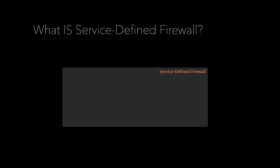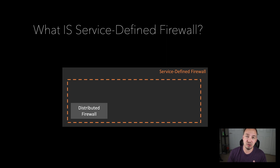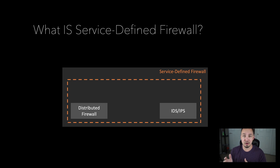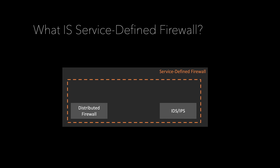Let's talk about what actually makes up the Service Defined Firewall — the actual components. The first is the Distributed Firewall, which is essentially a stateful firewall built into the hypervisor in the case of vSphere. If you're doing bare metal, there's an agent that gets installed on bare metal servers as well. This provides firewalling down to the vNIC of each individual VM. The next component is the Distributed IDS/IPS, which sits exactly where the Distributed Firewall sits, in a distributed manner. So there are no blind spots and no hairpinning traffic to an IDS/IPS — it's all completely in the data plane. As traffic leaves a VM, it hits the Distributed Firewall first, then the IDS/IPS, and goes on its way.